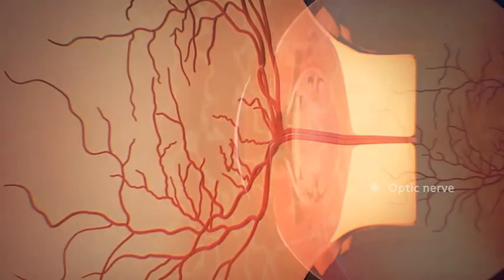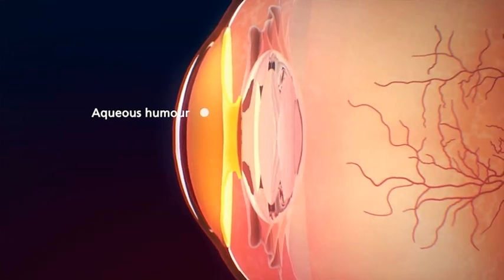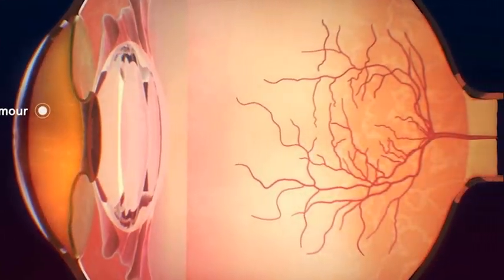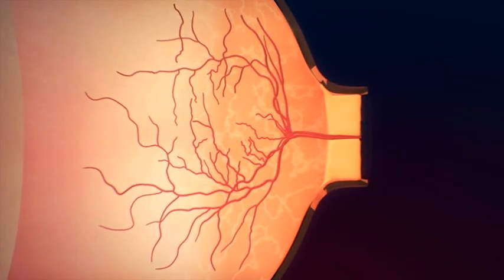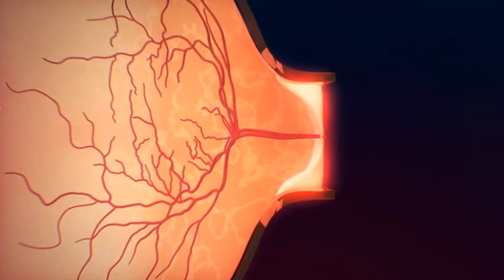The fluid in the eye, the aqueous humor, nourishes the eye and maintains pressure. During glaucoma, an imbalance between fluid production and drainage increases pressure and causes optic nerve damage that leads to loss of vision.